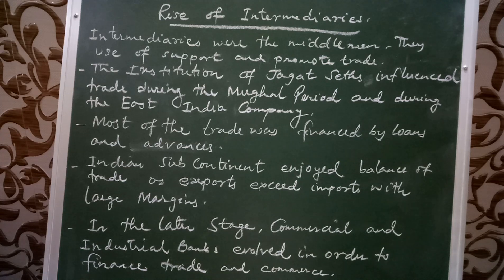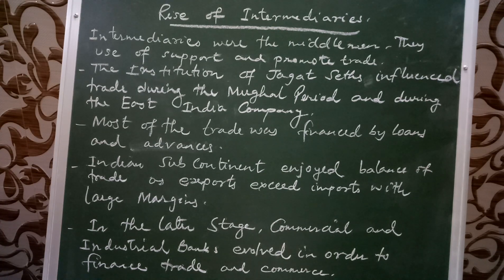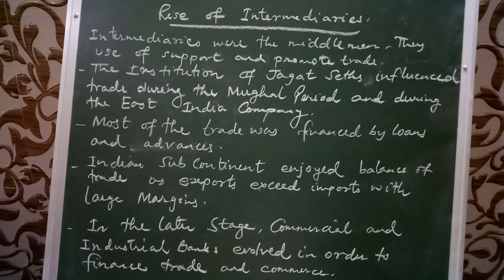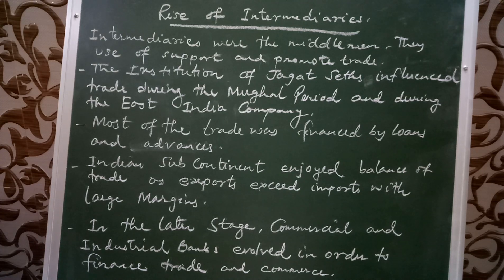The intermediaries — agents and middlemen — were commission agents, brokers, and distributors, both for wholesale trade and retail trade. The institution of Jagat states also developed and exercised greater control during the Mughal period and during the East India Company. Jagat states played the role of intermediaries, agents, brokers, and middlemen during the Mughal period as well as during East India Company rule.